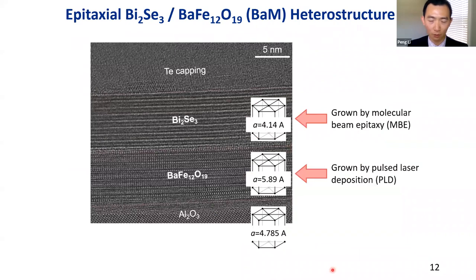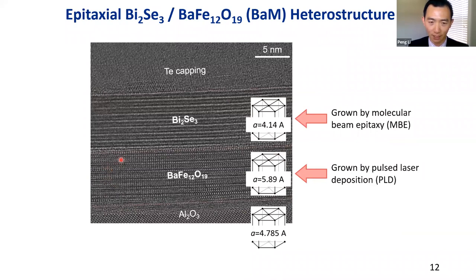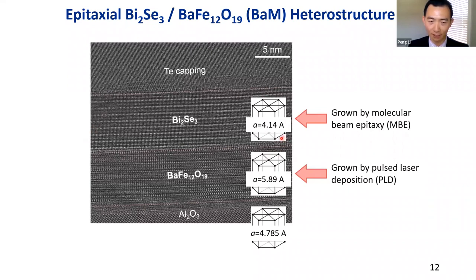TEM microstructure analysis shows the aluminum oxide substrate at the bottom, then the barium hexagonal ferrite layer — most of the lattice shows clear single crystallinity. On top is bismuth selenide. At the interface, there is less than one angstrom of lattice irregularity at some parts due to lattice mismatch between bismuth selenide and BaM, but surprisingly only a very thin irregular layer exists and most of the bismuth selenide remains single crystalline.